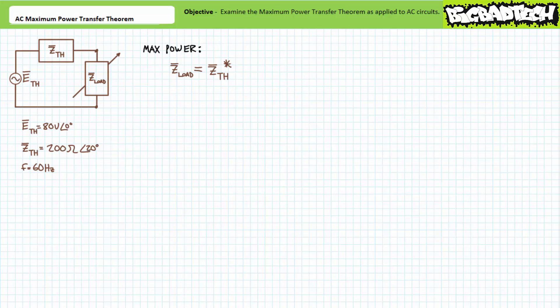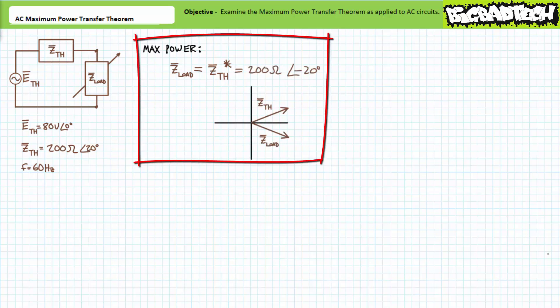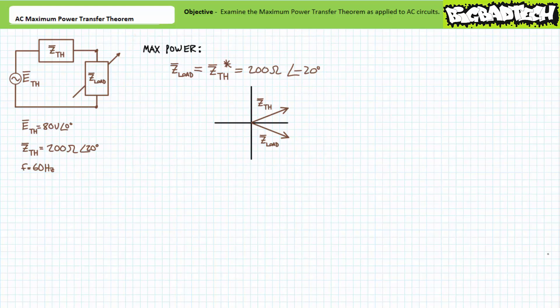The maximum power transfer theorem as applied to AC circuits states that a variable load impedance will receive maximum power from a circuit when its impedance is equal to the complex conjugate of the Thevenin's equivalent impedance. The complex conjugate of 200 at an angle of positive 20 is 200 at an angle of negative 20. Don't make the complex conjugate operation hard — if something has a positive angle, make it negative; if something has a negative angle, make it positive. We should therefore expect maximum power conditions when our variable load impedance equals 200 ohms at an angle of negative 20 degrees.